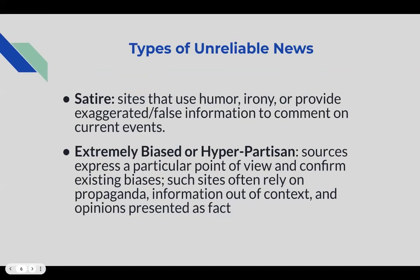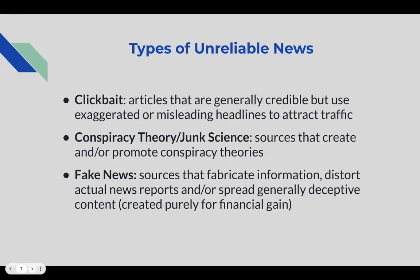There are a few types of unreliable news. First, satire: sites that use humor, irony, or hyperbole to provide exaggerated or false information in response to current events. There is also extremely biased or hyper-partisan news — sources that express a particular point of view and confirm existing biases. Examples include sites that rely on propaganda, information that is out of context or misinterpreted, and opinions presented as facts.